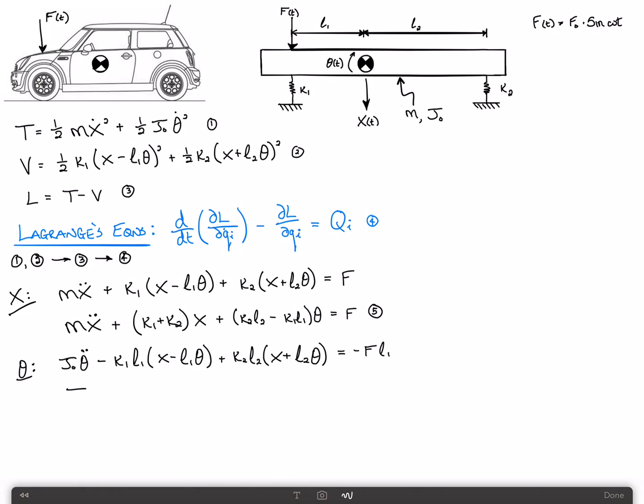Okay, and I'm going to choose to rewrite this as J sub 0 theta double dot plus K2 L2 minus K1 L1 times X plus K1, minuses cancel, so it's K1 L1 squared plus K2 L2 squared times theta is equal to minus F times L1. And we'll call that equation 6.